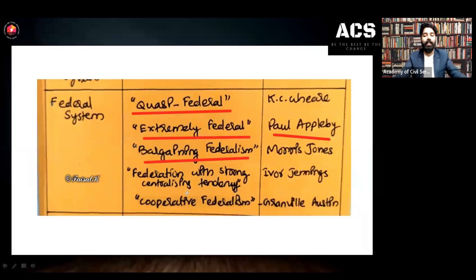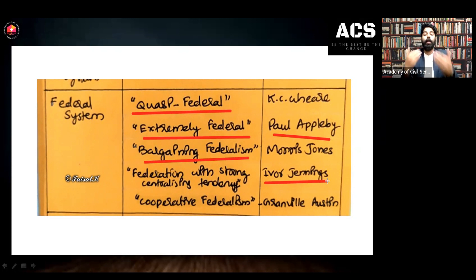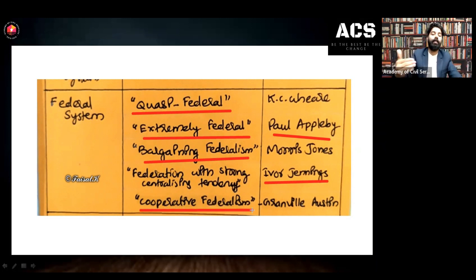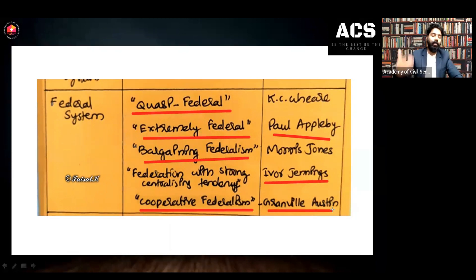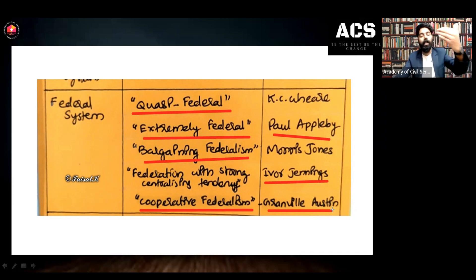Federation with strong centralizing tendency in India was described by Sir Ivor Jennings. Cooperative federalism — cooperation between the center and states or between states in order to achieve common objectives — was described by political philosopher Granville Austin. This particular description was asked in a Kerala Administrative Service exam. Similarly, these descriptions and political philosophers' opinions about Indian federalism will be asked in your prelims examination. These are mind notes prepared from an exam perspective.